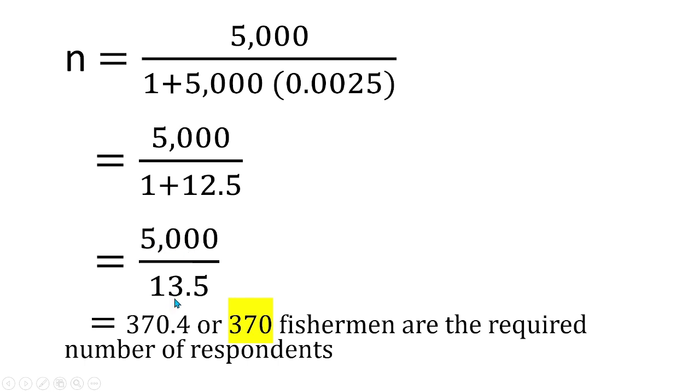So 5,000 divided by 13.5 gives us 370.4. We shall round off this number to the nearest unit, which is 370. That means we need 370 fishermen as our respondents for that particular study.